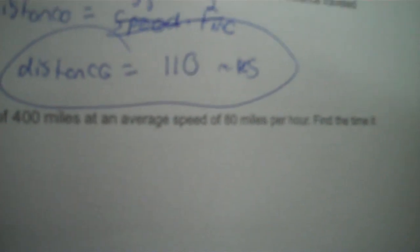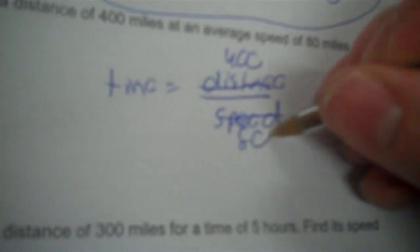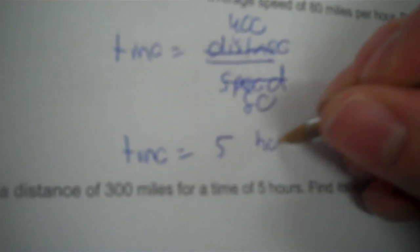A car travels a distance of 400 miles at an average speed of 80 miles per hour — find the time it travels. Time equals distance divided by speed. The distance is 400 and the speed is 80. 400 divided by 80 is 5 — so the time equals 5 hours.